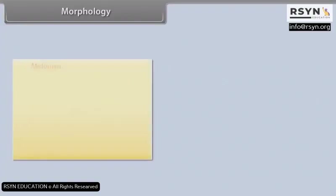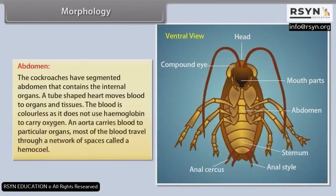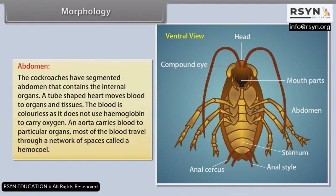Abdomen: The cockroach has a segmented abdomen containing the internal organs. A tube-shaped heart moves blood to organs and tissues. The blood is colourless as it does not use haemoglobin to carry oxygen. An aorta carries blood to particular organs. Most of the blood travels through a network of spaces called a haemocoel.